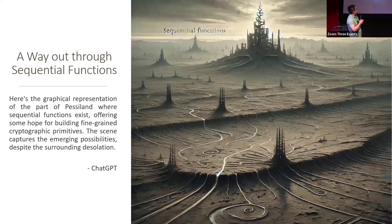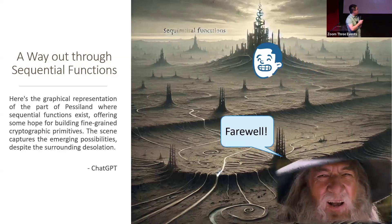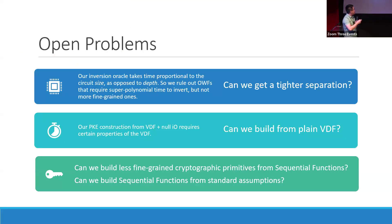So with that, we're happy to have found sequential functions, and we're able to escape Passyland by constructing cryptographic primitives using them, and the old man let us go. The old man also posed some open problems. I'll be happy to take any questions.